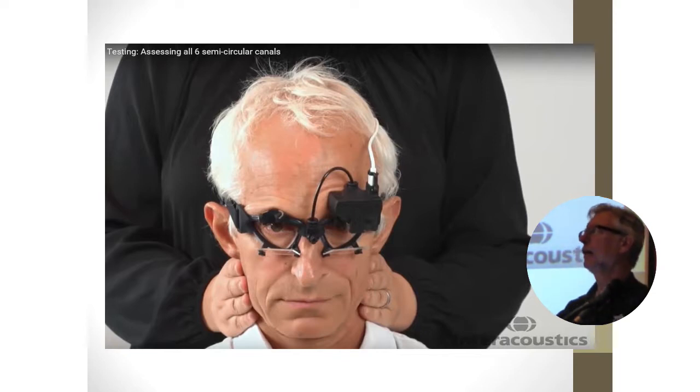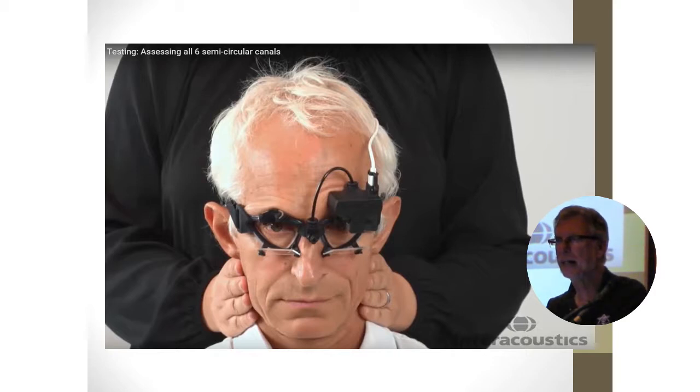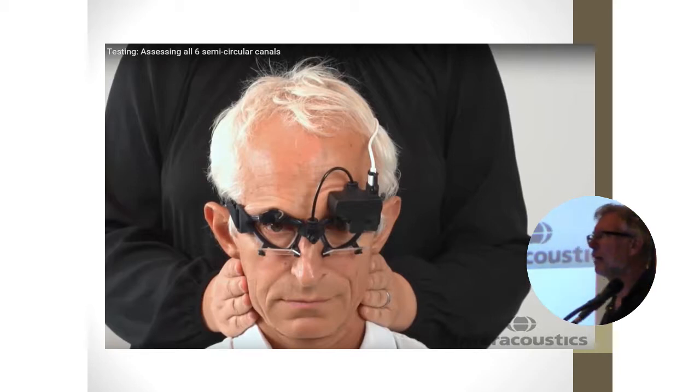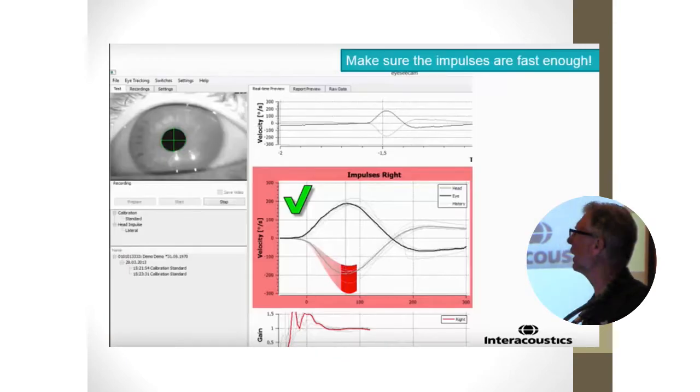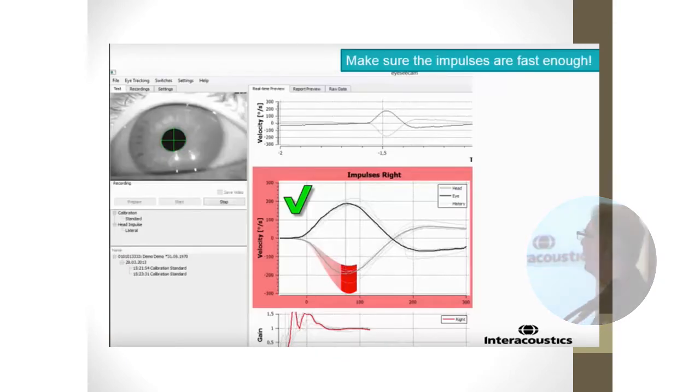Dr. Gans does a great job at teaching people how to do this. But the equipment actually teaches you how to do it as well. Because for every impulse that you try to make, when you do it correctly, you get a nice green check mark like this.